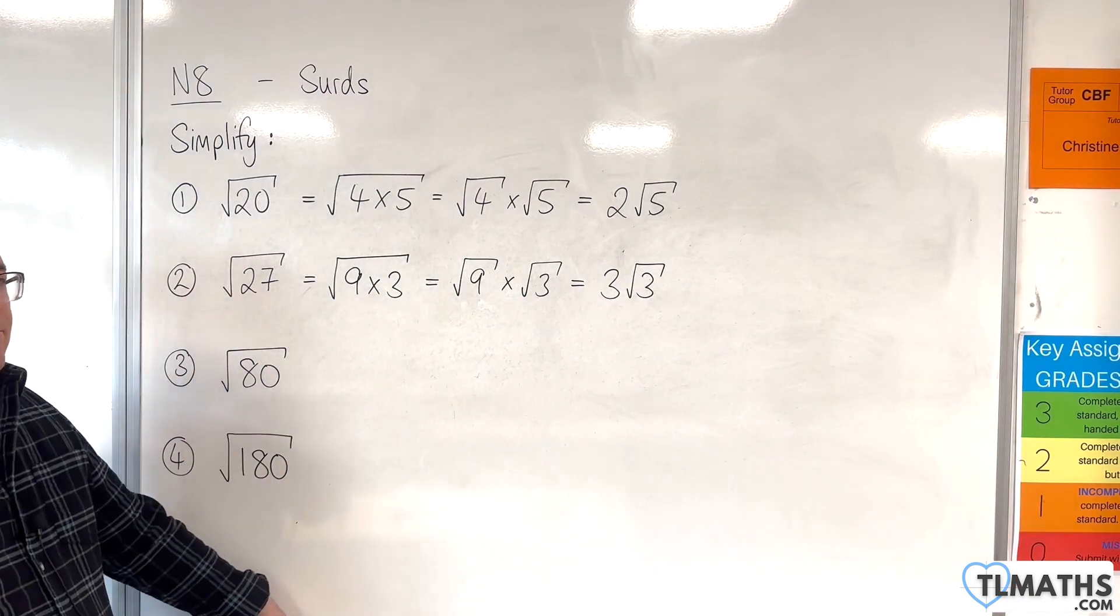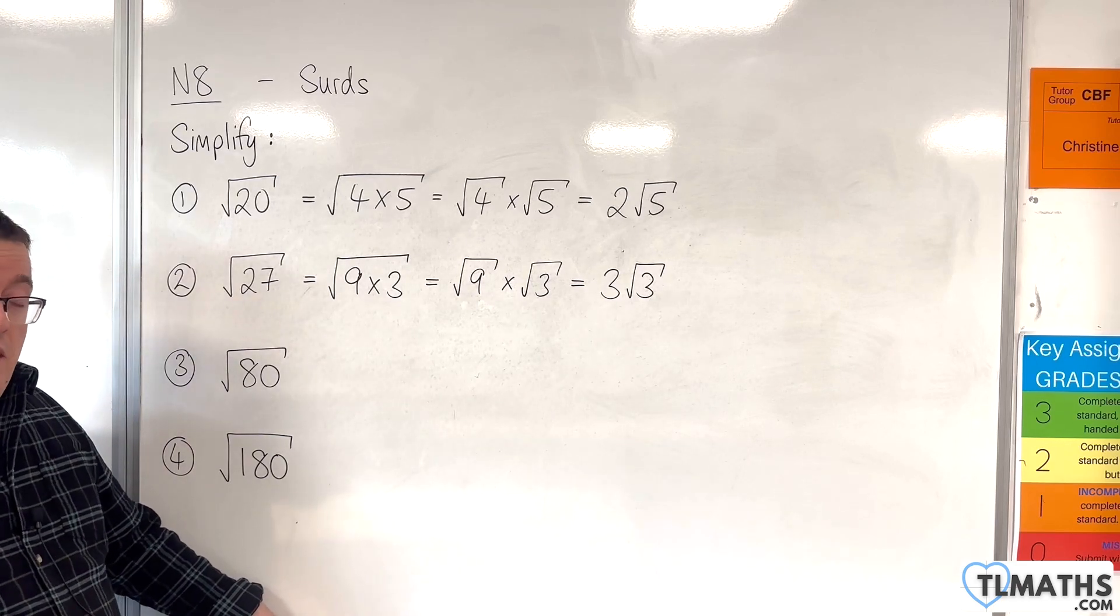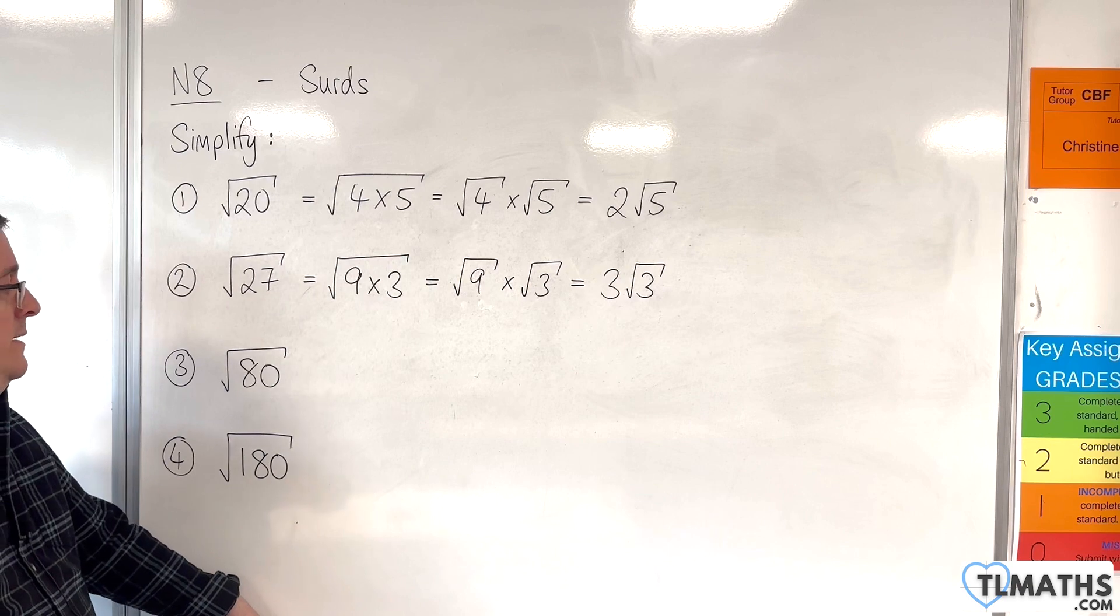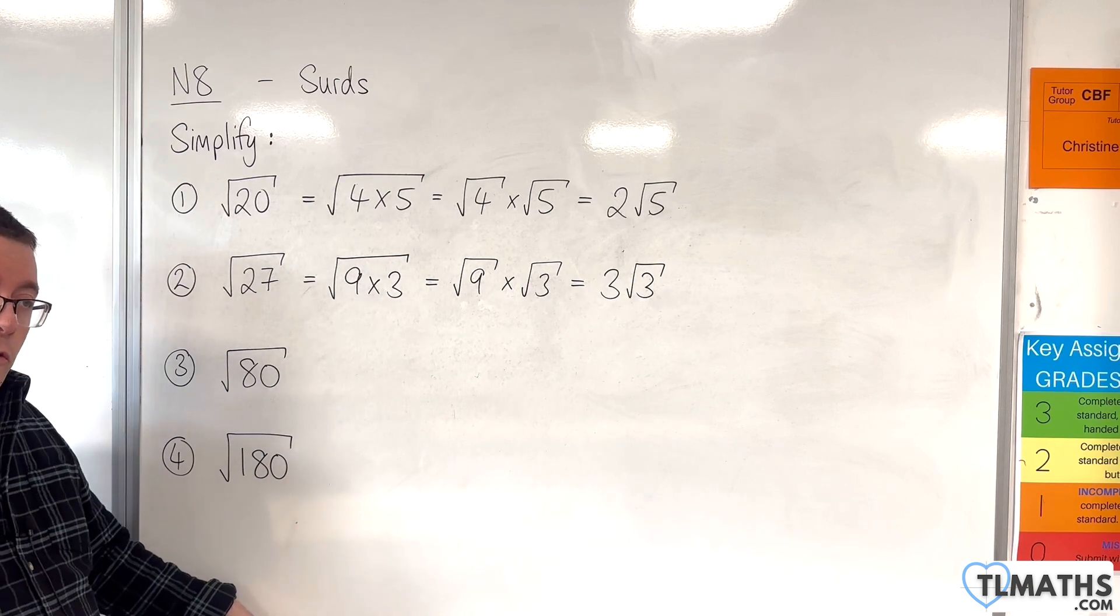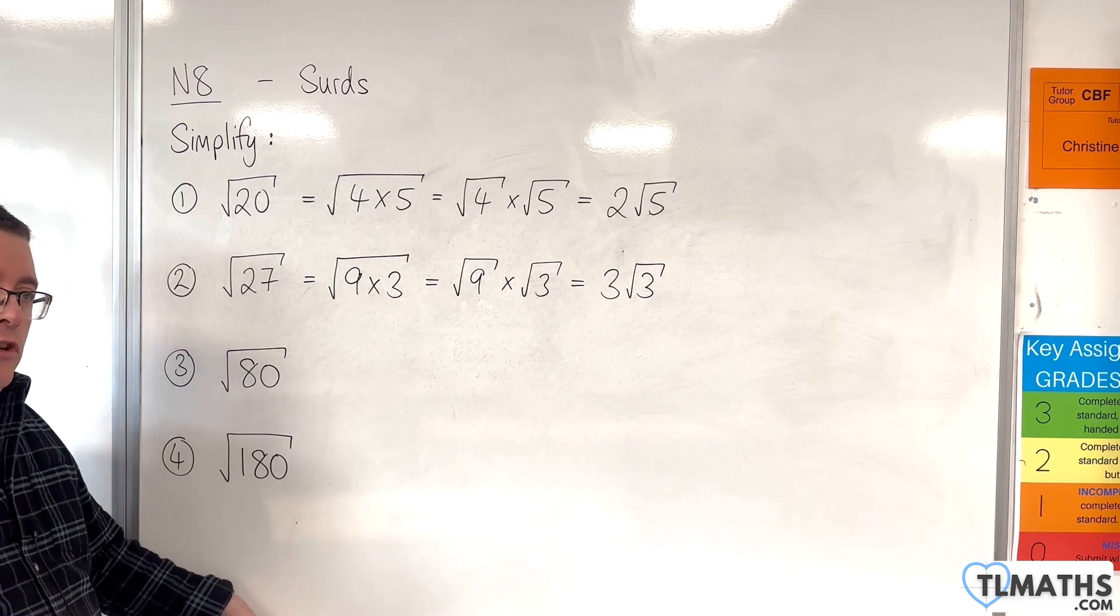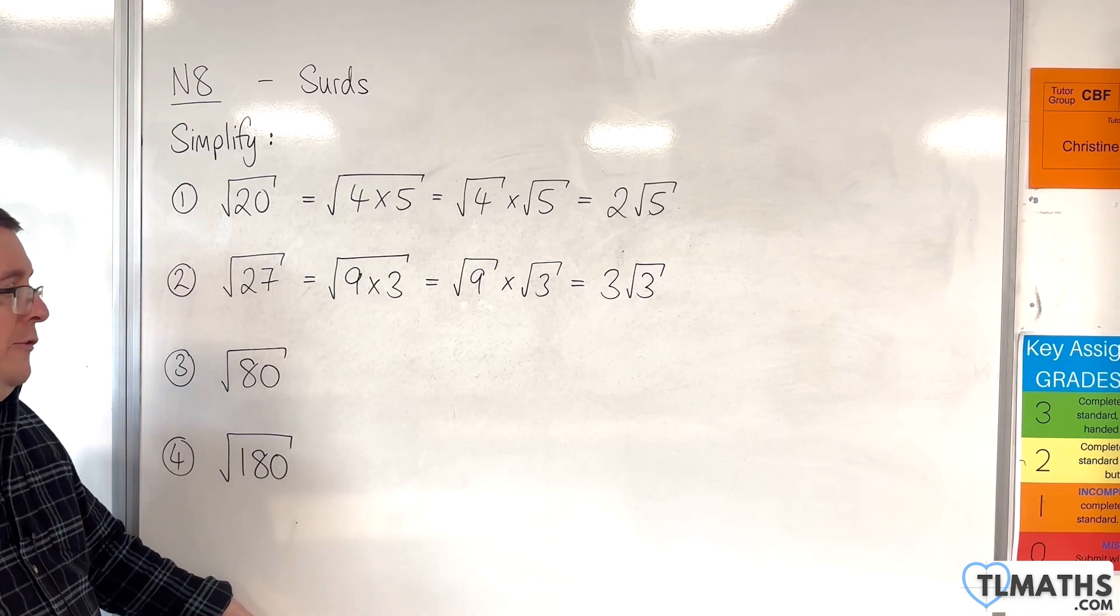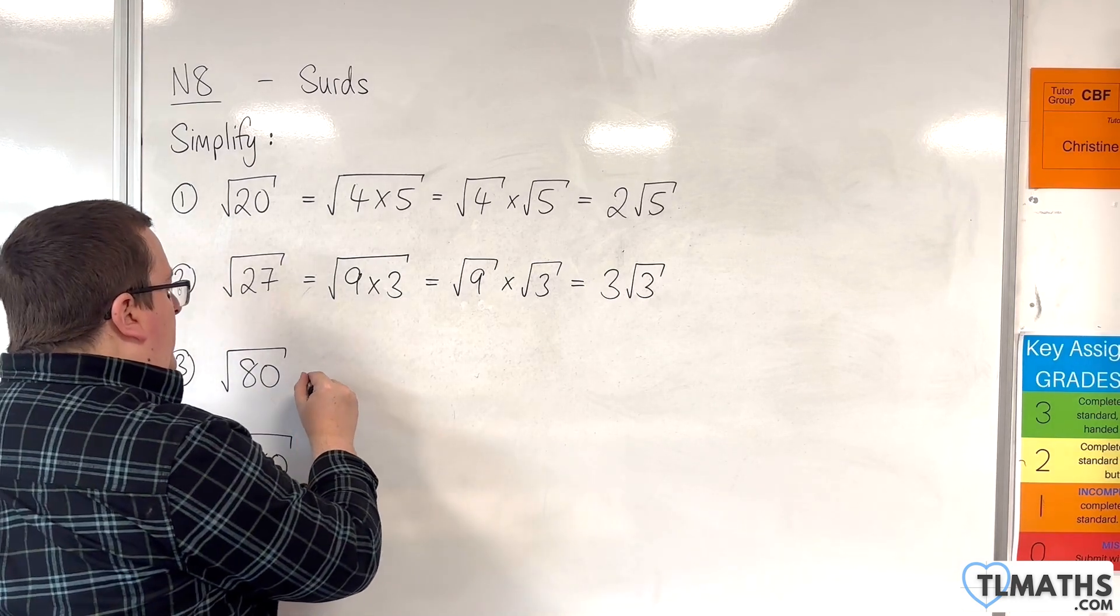Square root of 80. Now a square number that goes into 80 would be 16. 4 goes into it as well. So you could do this in a couple of stages. So I'll do it two different ways. Let's split this up.